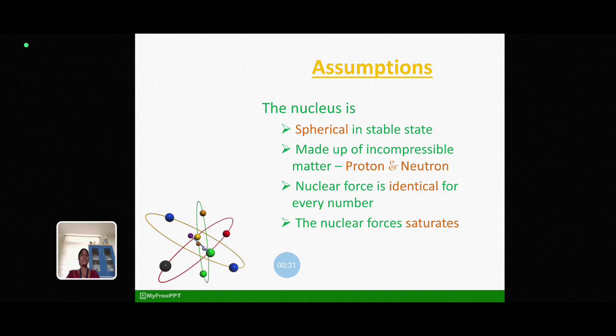What are the basic assumptions assumed by Bohr and Wheeler for this LD model? Well, they assumed that the nucleus is spherical in stable state.